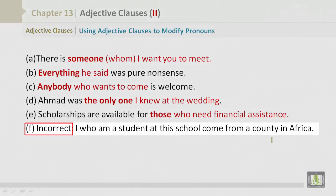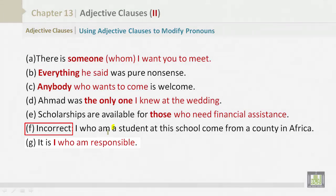Incorrect would be, I, who am a student at this school, come from a country in Africa. It is I who am responsible. Both of these are incorrect.